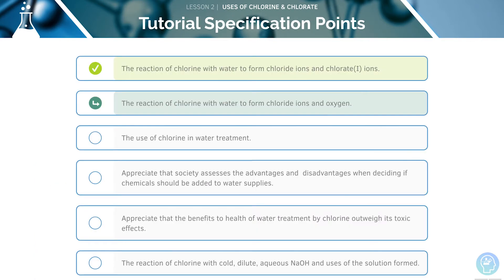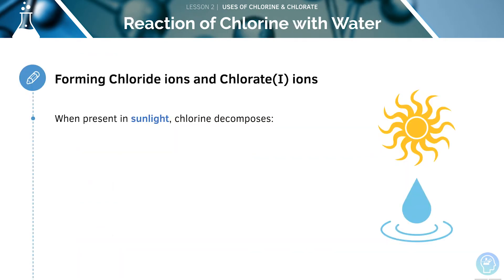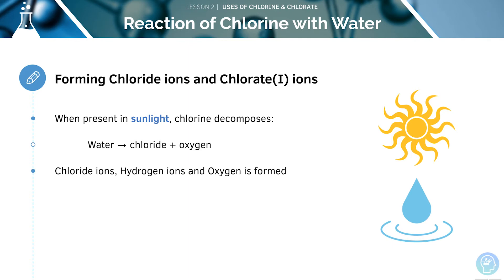Now let's look at forming chloride ions. When present in sunlight, chlorine will decompose, forming water going to chloride and oxygen. From this, we can form chloride ions, hydrogen ions, and oxygen.